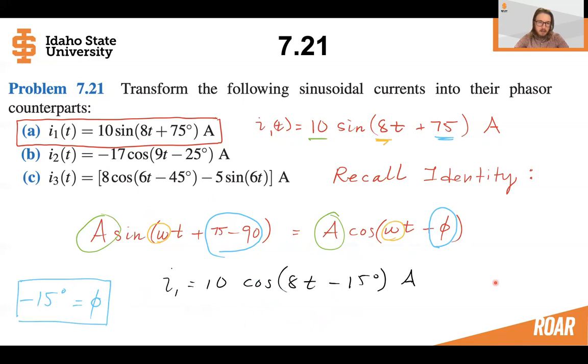So we can substitute this in. So I1 is equal to 10 cosine 8t minus 15 degrees. So we transformed I1 from being a sinusoid to a cosinusoid. And if we convert this to the phasor, we can see that the amplitude goes here. And then this angle is minus 15.